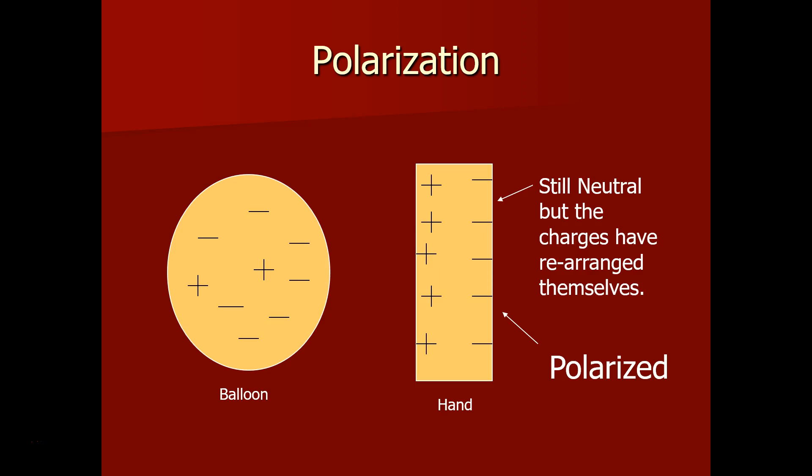When the negative balloon is moved over to the neutral wall, all the negative charges move away. They're repelled; like charges repel. All the positive charges stay in place, so now the outer layer of that hand is positively charged, so it's attracted to the negatively charged balloon.